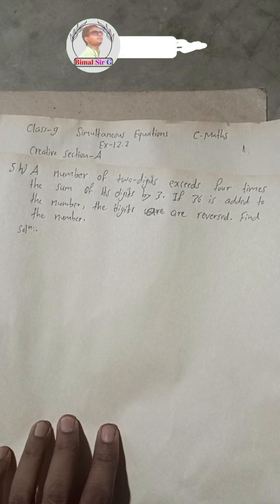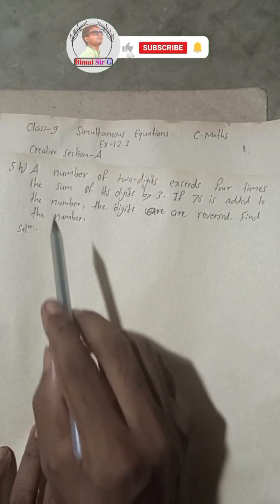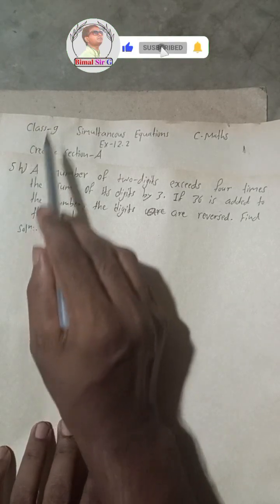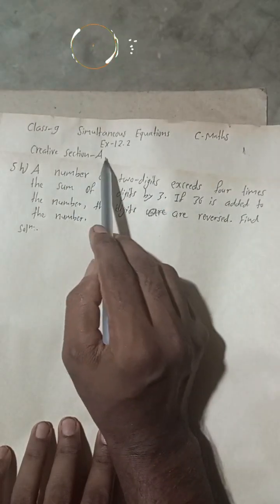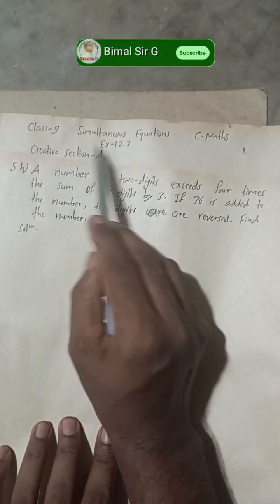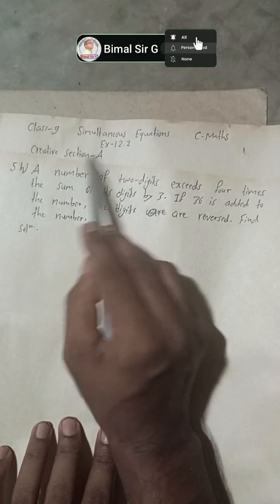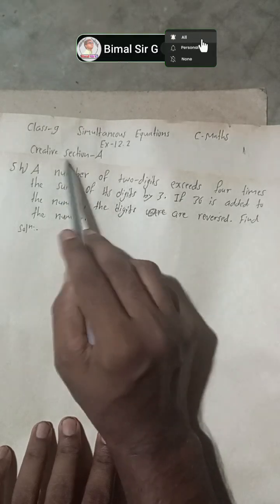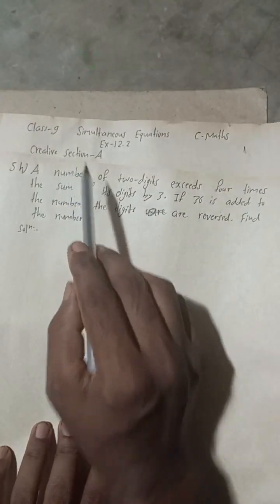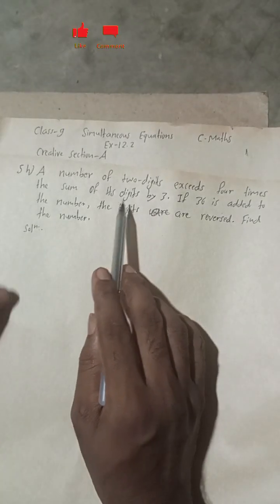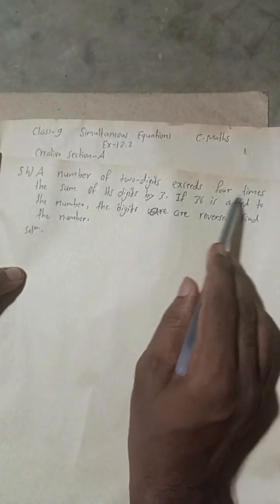Hi everybody, welcome back to Bimal Sarji's YouTube channel. This is question number five, Class 9 simultaneous equations, creative section A. I have already uploaded the videos of creative section B, so you can watch that. I am doing from last to first, so please check the playlist.